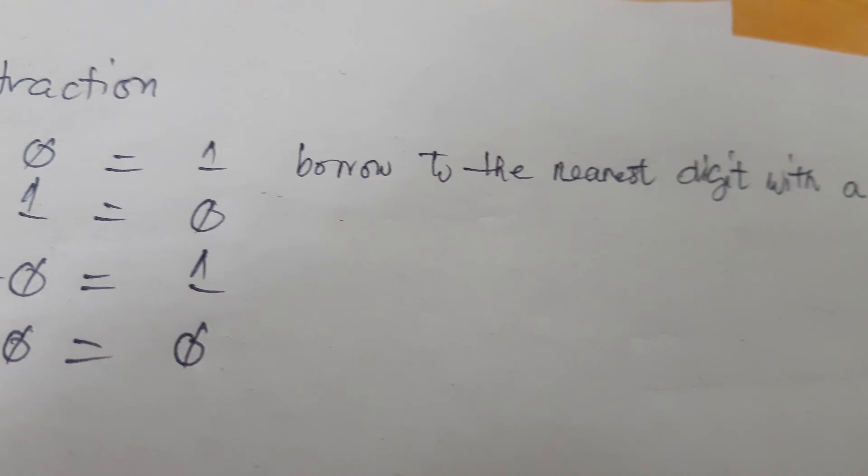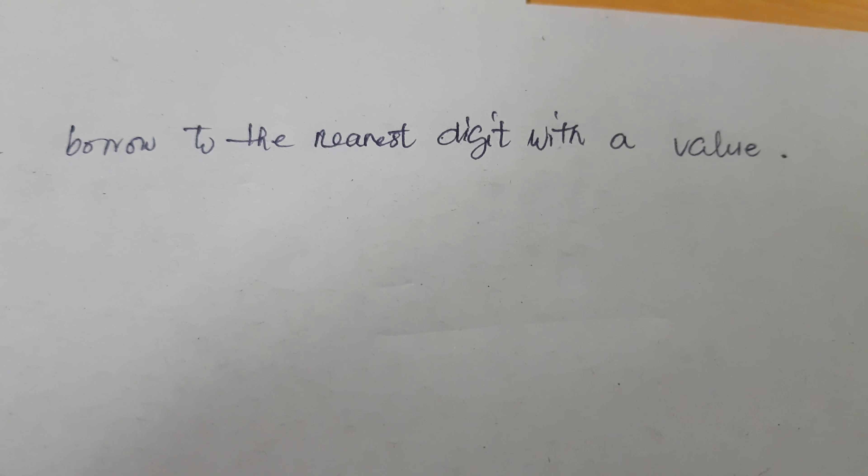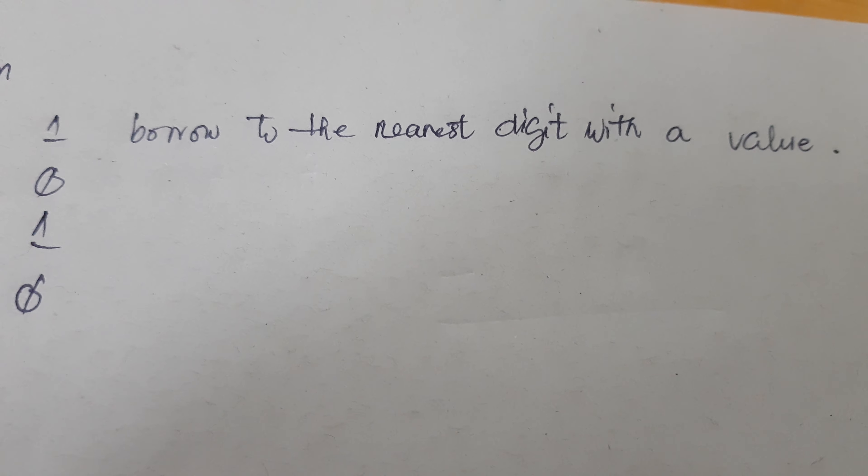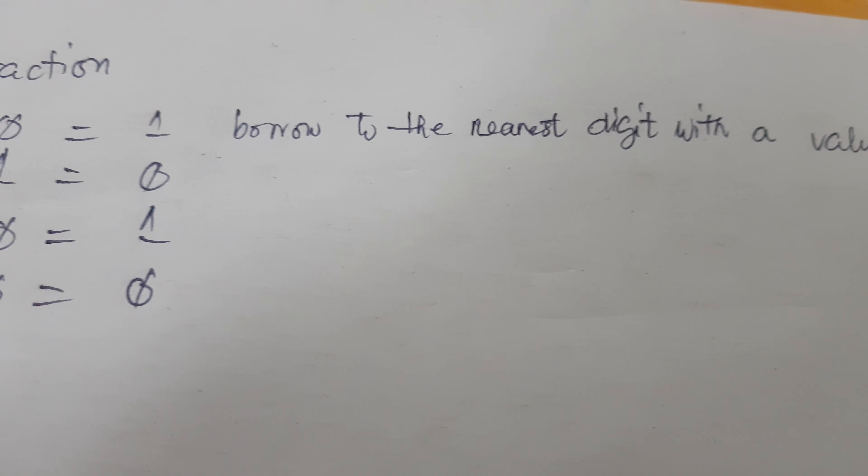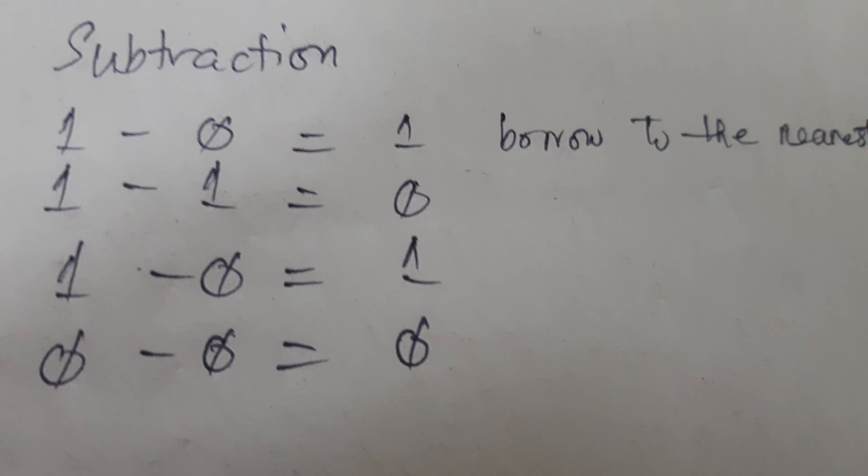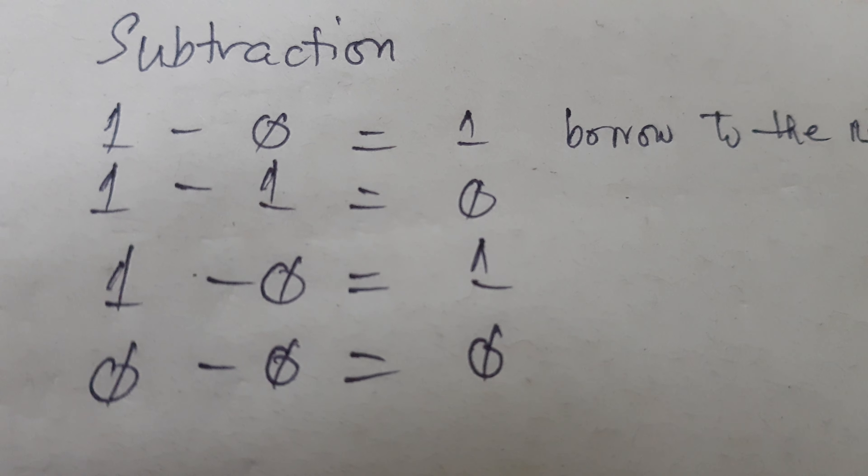But we need to borrow to the nearest digit with a value, so it means that we need to borrow to a digit that contains a value. If the next digit is zero, we are going to locate the nearest digit with one.